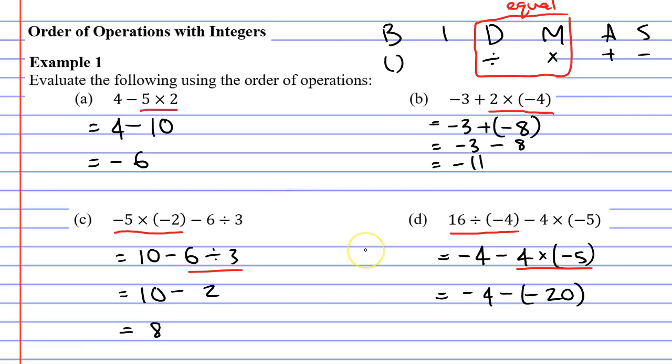Now we've got basically what we call a double negative where we're subtracting a negative number and we're taught that we can change that into a single plus sign. So this is now negative 4 plus 20 which equals 16 and that concludes our video on example 1.